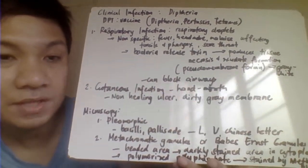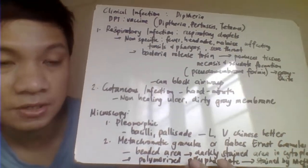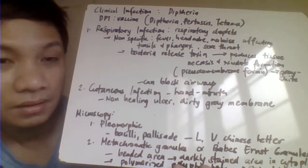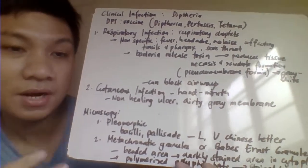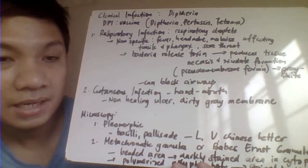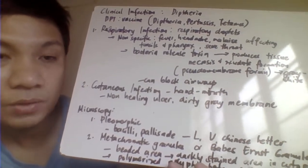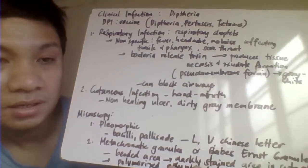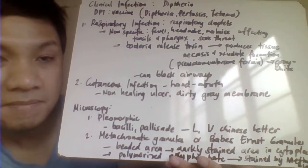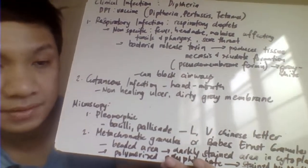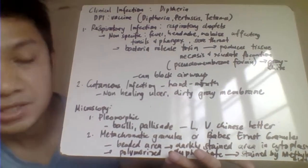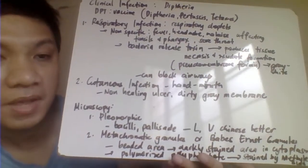Diphtheria has two manifestations: pulmonary and cutaneous. Pulmonary diphtheria is transmitted by respiratory droplets. Bacteria enter through the nasal respiratory tract, causing nonspecific manifestations like fever, headache, and malaise. It affects the tonsils and pharynx causing sore throat. The bacteria then release toxin producing tissue necrosis and exudate formation — a gray-white exudate called pseudomembrane formation.